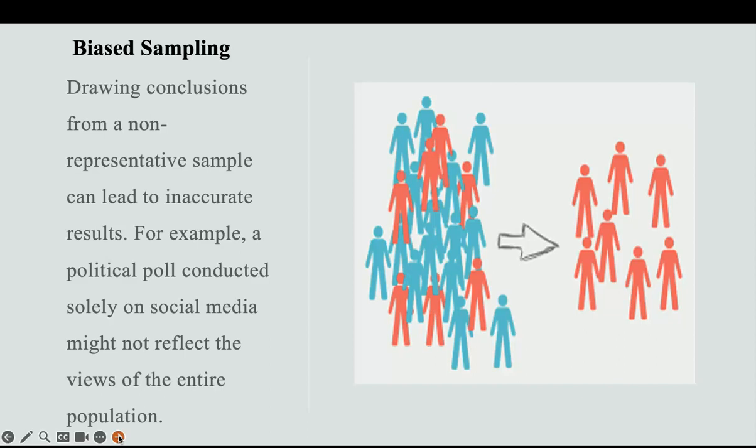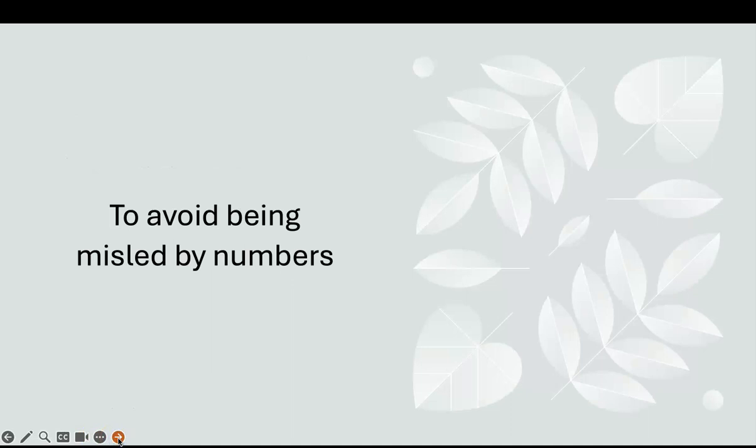Drawing conclusions from a non-representative sample can lead to inaccurate results. As you can see in the picture, the folks in red are males and those in bluish-green are females — and the sample size does not represent the total population. To get an accurate representation, you would use a technique called stratified sampling: randomly select four from the males and four from the females to get eight total, giving you a representative sample of that population.